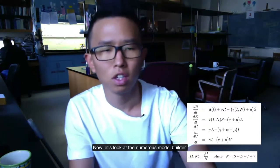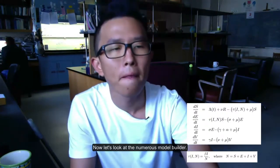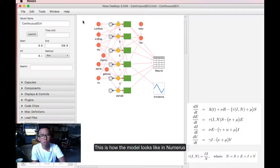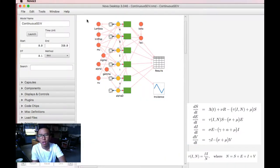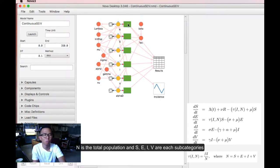So now let's look at the Numerus model builder. This is how the model looks like in Numerus. We have a total of six stocks and six flows. N is the total population.